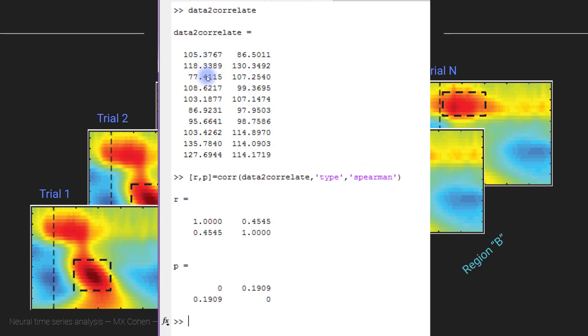And that gives you one number per trial per region. So in the end you would end up with a set of numbers, a list of two lists of numbers that look something like this. So this would be trial one from electrode A and trial one from electrode B, and so on. And then in the end you simply correlate this vector with this vector and you look at that correlation coefficient.